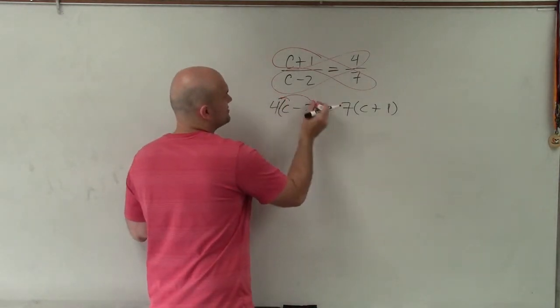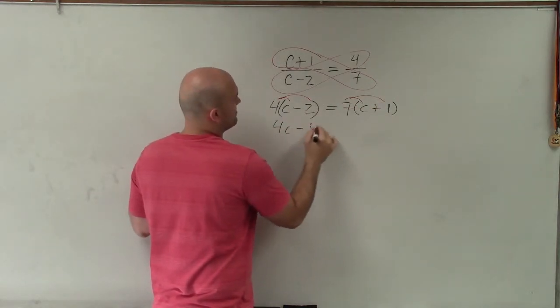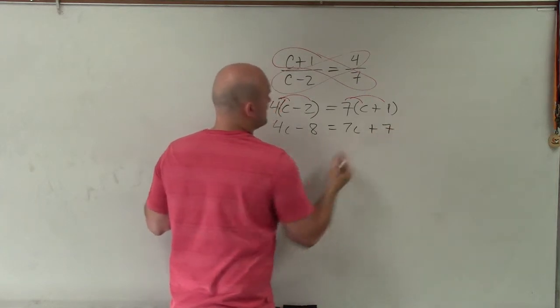Now, since I have those parentheses, I have to apply my distributive property. And therefore, I get 4c minus 8 equals 7c plus 7.